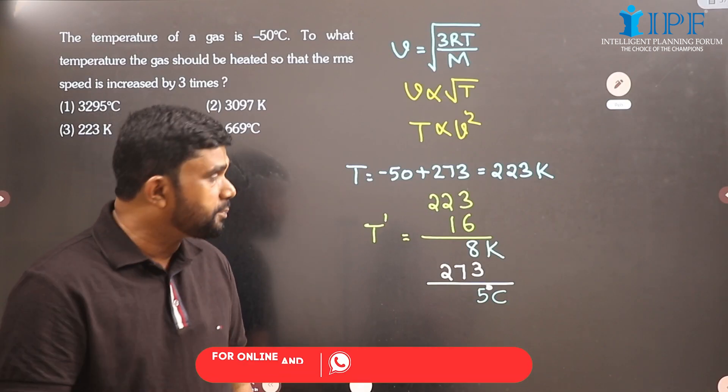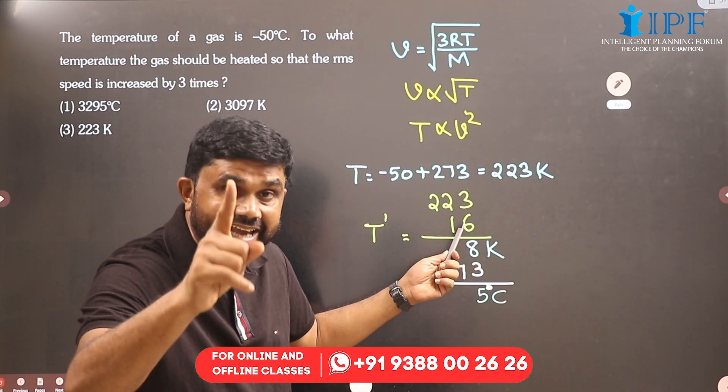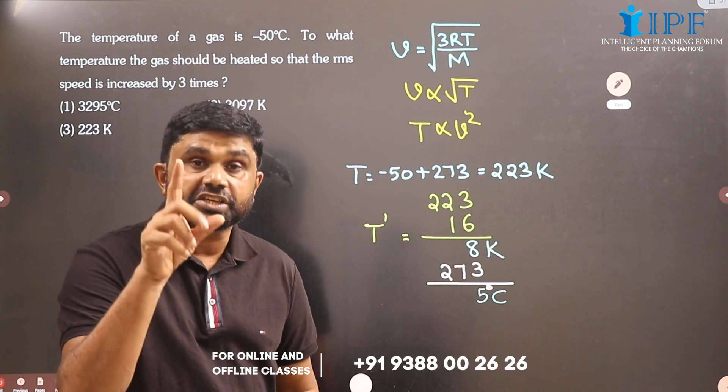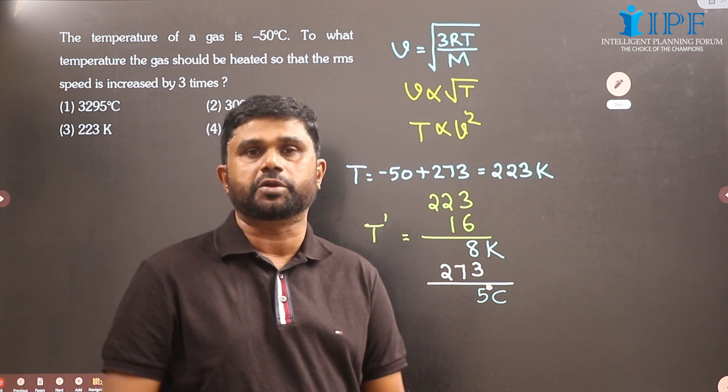You need not do the multiplication. See what comes at the unit place. At the unit place, 3 into 6 is 18, or 8 comes at the unit place. So if the temperature is in Kelvin, there must be 8 at the unit place.